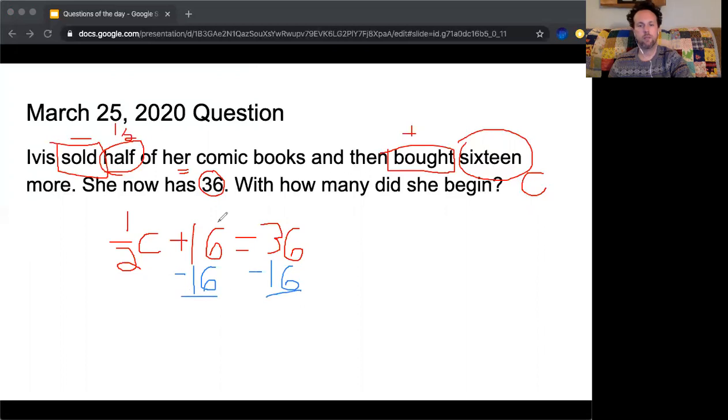36 minus 16 gives us 20, and then 16 minus 16 is 0. One half of the comic books that we have is equal to 20.